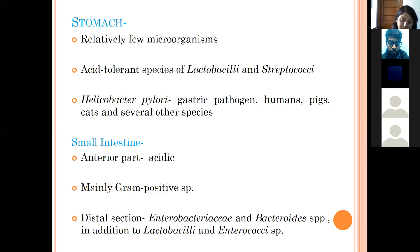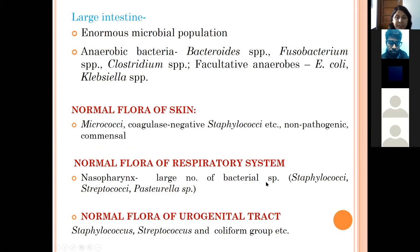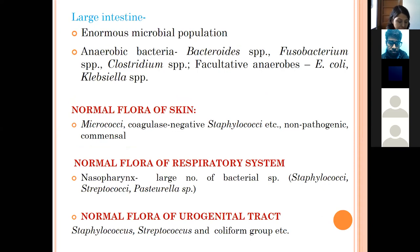Other bacteria in the small intestine include Lactobacilli and Enterococci. In the large intestine, an enormous bacterial population is present, including anaerobes like Bacteroides, Fusobacterium, and Clostridium, as well as facultative anaerobes like E. coli and Klebsiella.